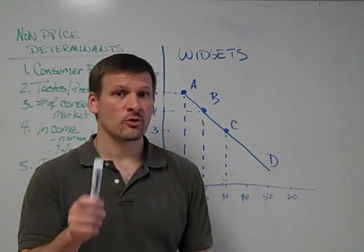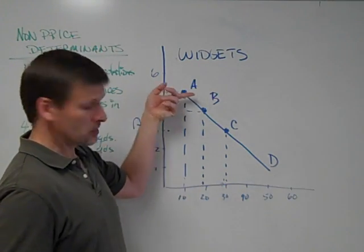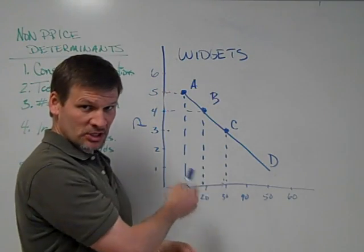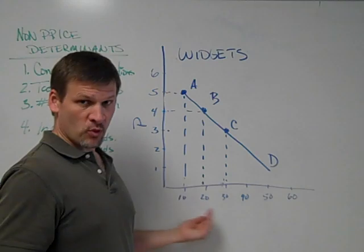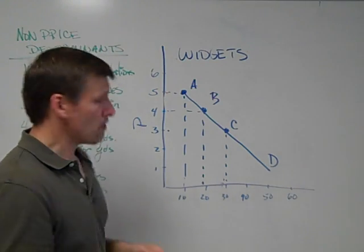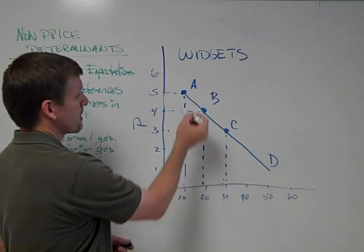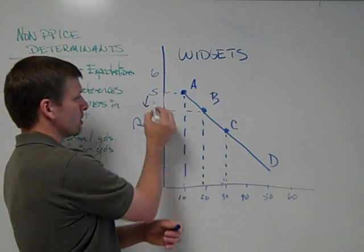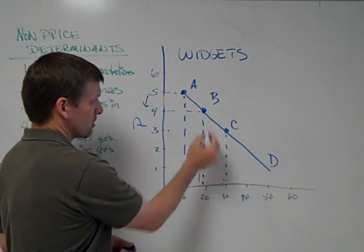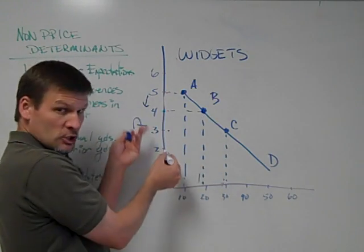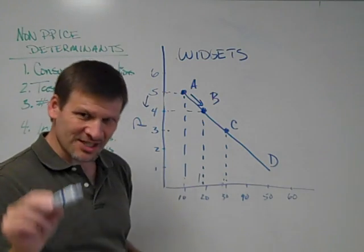First, quick review. Yesterday we were analyzing the widget market, and we noted that at high prices the quantity demanded of widgets tended to be low. But as the price changed, as the price decreased, the quantity demanded of widgets increased. For example, at a price of $5 the last lesson, we noted that consumers only wanted 10 widgets, and that produced a point A. But if we drop the price to $4 per widget, consumers now wanted 17, producing a point here at $4, 17, which is B.